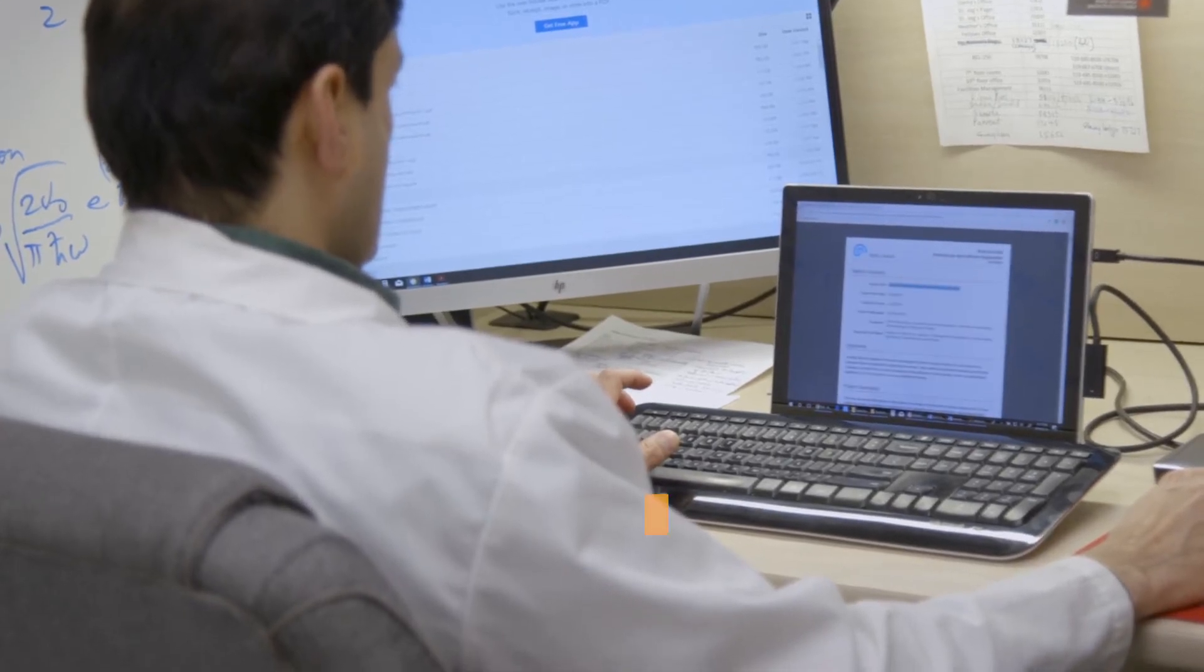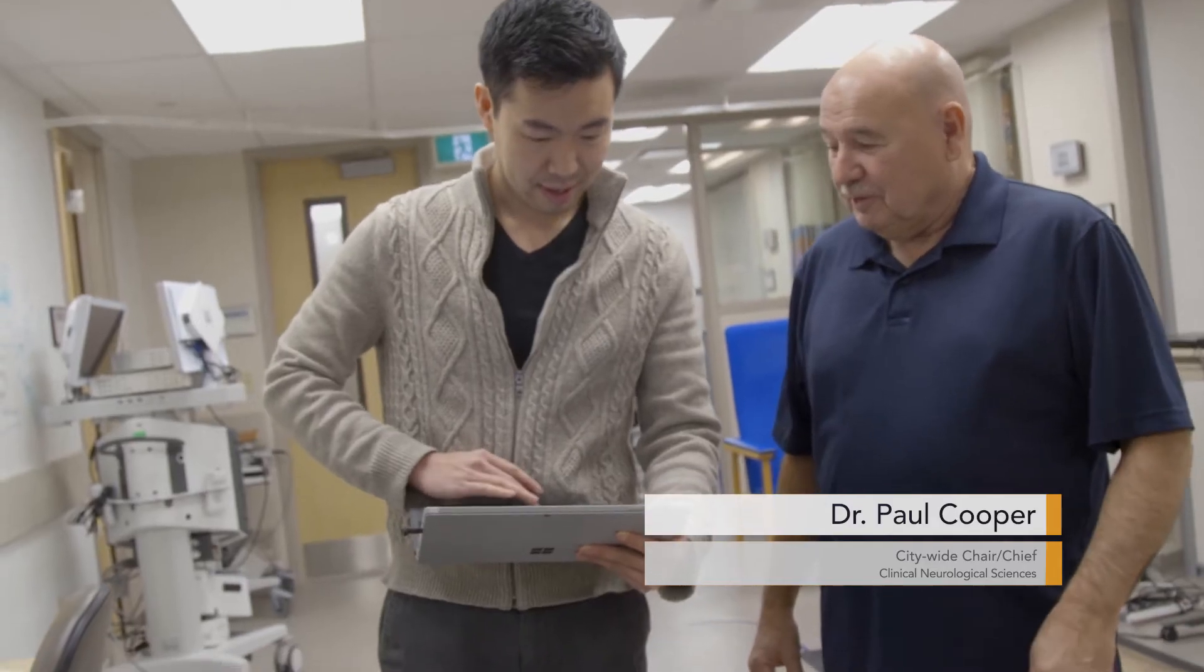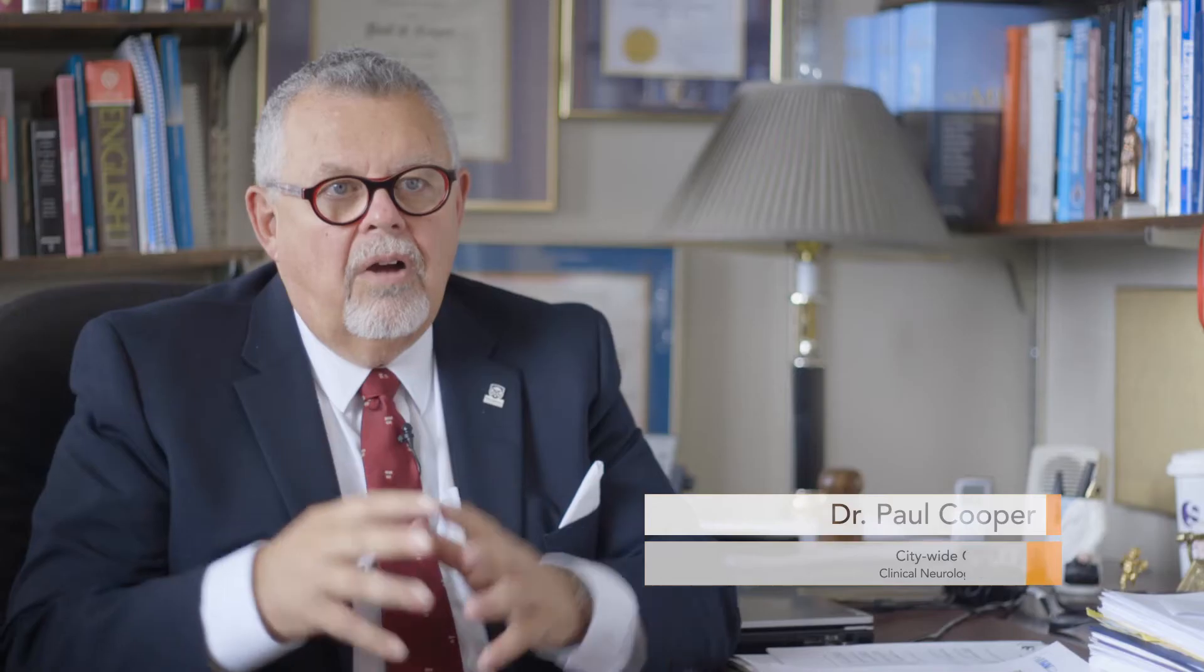When they developed high speed photography, they were actually able to show that yes, at certain points, the horse's feet, all four of them, are off the ground at the same time. The analogy kind of applies to the tremor in Parkinson's disease which can be very complex.